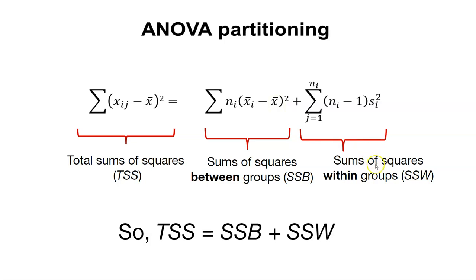Then we have the sums of squares within groups. You can think about this as the variability within one treatment. Here's the number of observations in that treatment i minus one, multiplied by the variance.